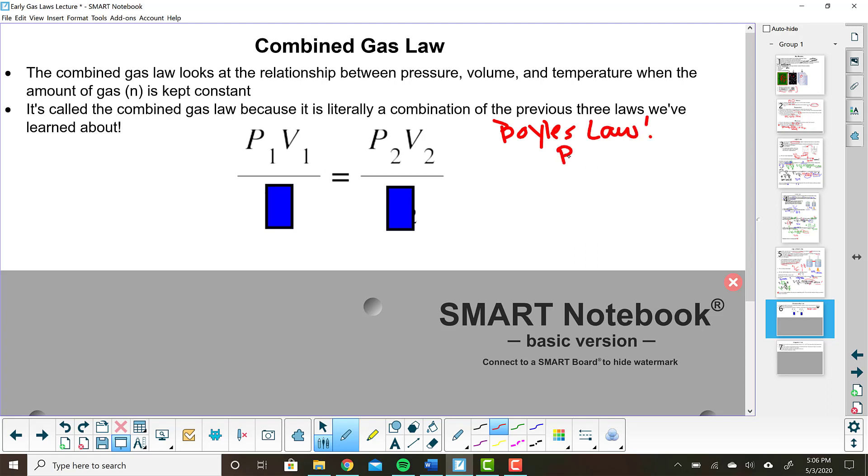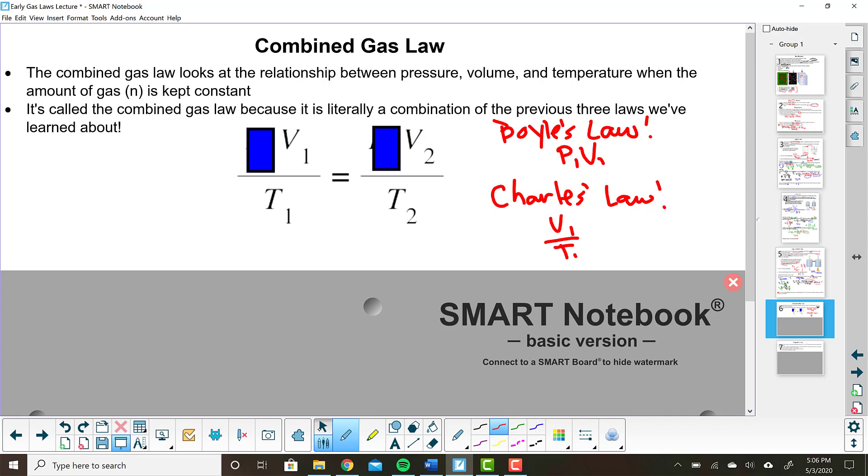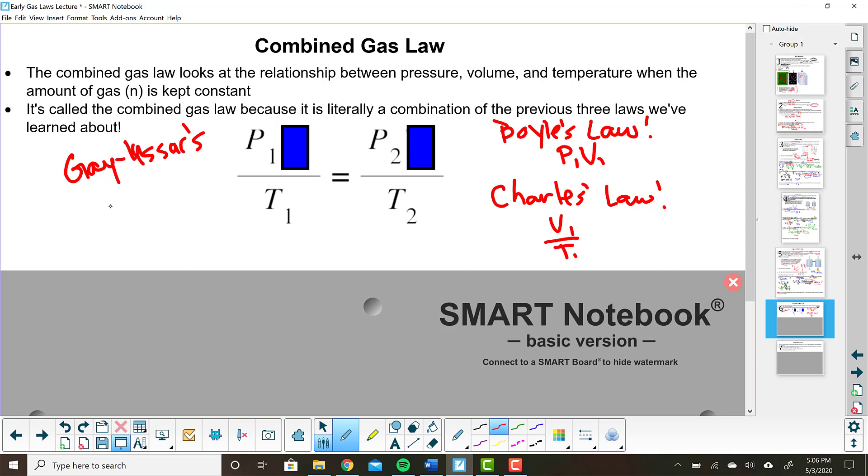So I've got pressure and volume, which is Boyle's Law. Or if I hold the pressure constant, pressure constant, now I've got V1 over T1 equals V2 over T2. And that's the second law that we learned about, Charles' Law. So Charles' Law has to do with volume and temperature. And then the last law is the one that we just learned about here. This is if we keep the volume constant, then we have P1 over T1 equals P2 over T2. And that's Gay-Lussac's Law. So this combined gas law is really just a combination of the three laws that we have already learned.